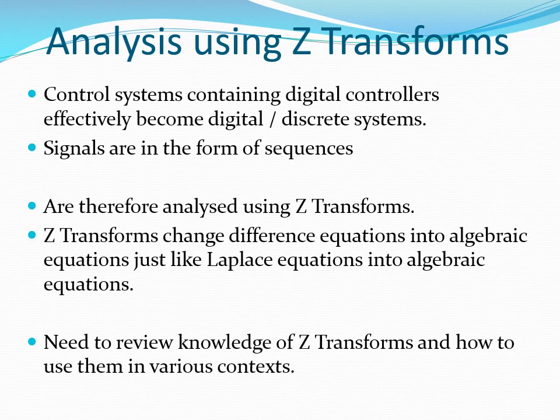Control systems that contain digital controllers are effectively digital or discrete in nature. The signals in these systems are in the form of sequences. Digital control systems are analysed using methods that are used to analyse discrete systems. In other words, they are analysed using Z-transforms. For the analysis of continuous control systems, we use Laplace transforms. For digital control systems, we use Z-transforms and apply them in a way that is similar to the way in which we apply Laplace transforms. Before you proceed with the lecture, it will be important to make sure that you have sufficient knowledge of Z-transforms and how to use them in various contexts.